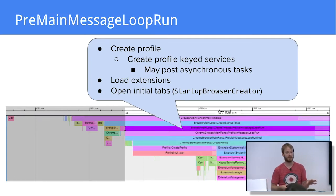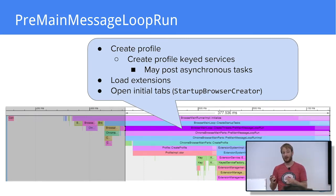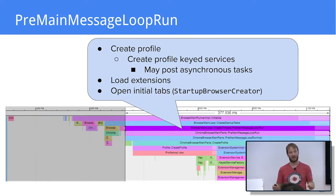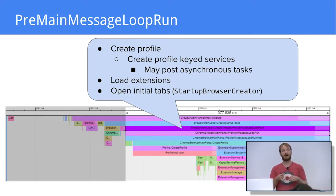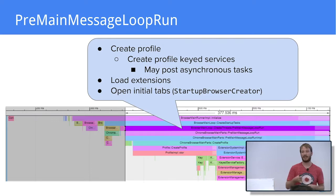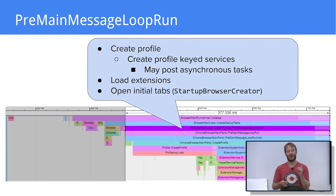Once the profile is ready, we load the extensions. We need to load extensions very early because an extension can affect how a navigation is performed. So before we start the first navigation, we need to have all extensions ready. Then the last important part of pre-main-message-loop-run is to figure out which tabs to open in the first browser window and start navigation on those tabs — this is done by startup browser creator.